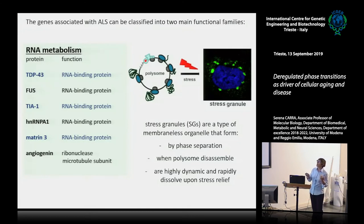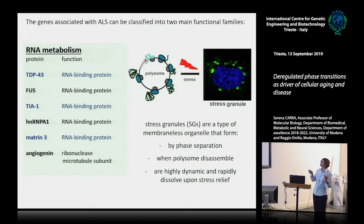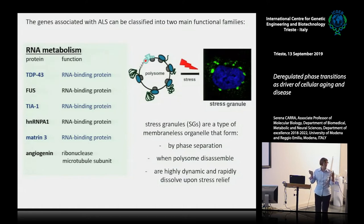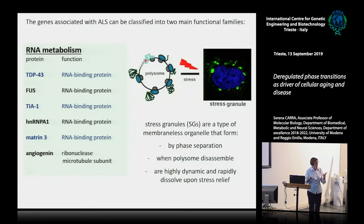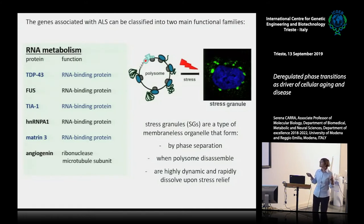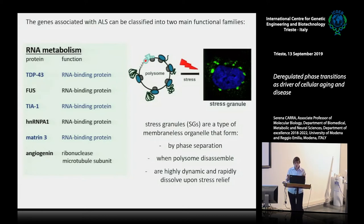Normally these proteins are recruited together with mRNA in polysomes and can regulate translation. Upon stress conditions, polysomes disassemble and messenger RNAs are released along with the RNA-binding proteins, early initiation factors of translation, and the 40S subunit of the ribosome, which are all recruited inside this membrane-less compartment called the stress granule — an RNA-protein complex. Stress granules form very rapidly upon different types of stress conditions such as viral infection, oxidative stress, and temperature upshift. They form by phase separation when polysomes disassemble, are highly dynamic, and generally rapidly dissolve upon stress relief.